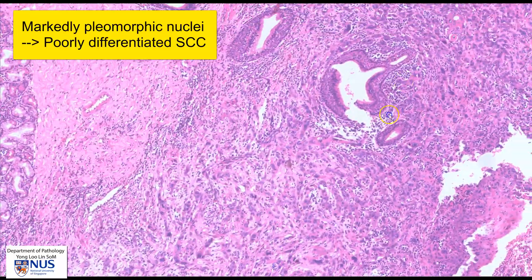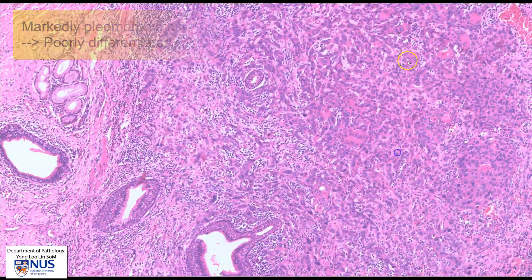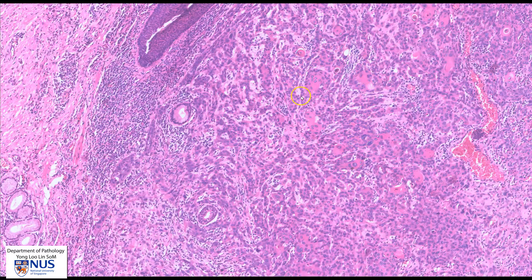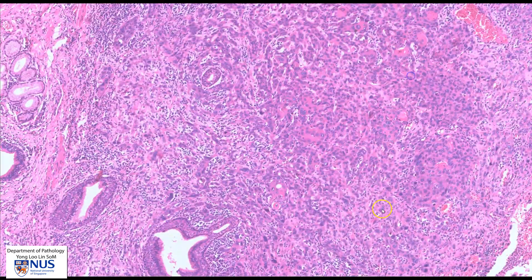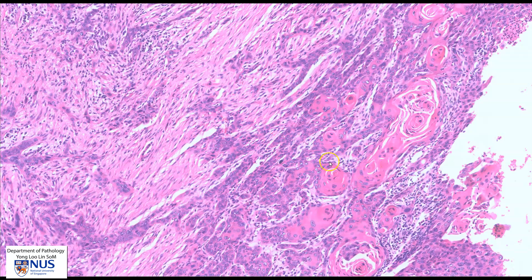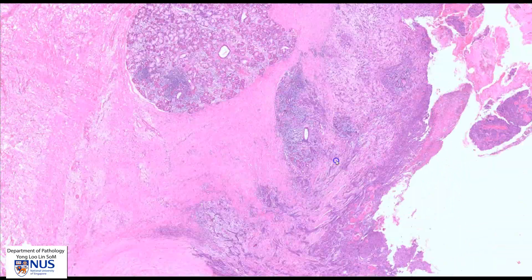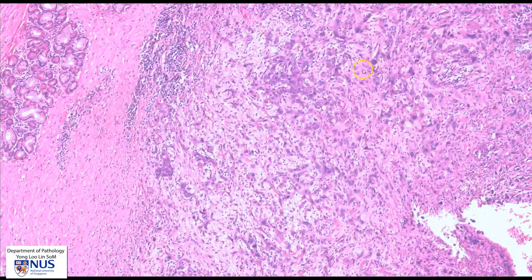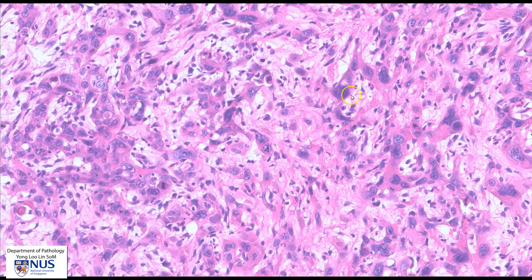So we have a range of differentiation here. In the better differentiated areas, we can still recognize this squamous appearance with keratin pearls, and over here we can also see very well-formed keratin pearls. However, in other areas, such as here, we can see that there is more pronounced nuclear pleomorphism, and in these areas the tumor would be considered poorly differentiated.